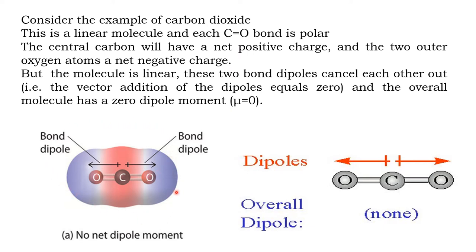In the CO₂ molecule, there is a charge separation: carbon has a partial positive and oxygen has a partial negative, so the dipole vector points towards the oxygen. Similarly, the other carbon-oxygen bond also has a dipole moment, but its direction is opposite to the first. The magnitudes are equal and the directions are opposite.